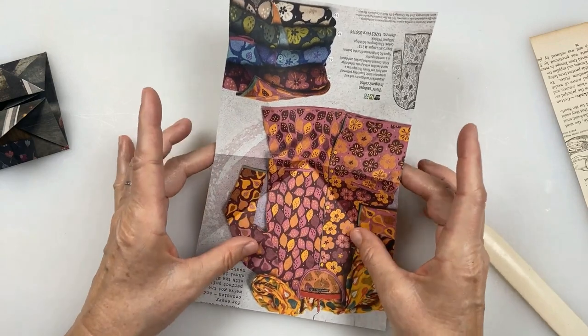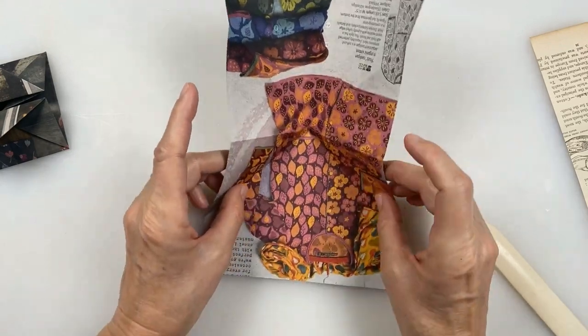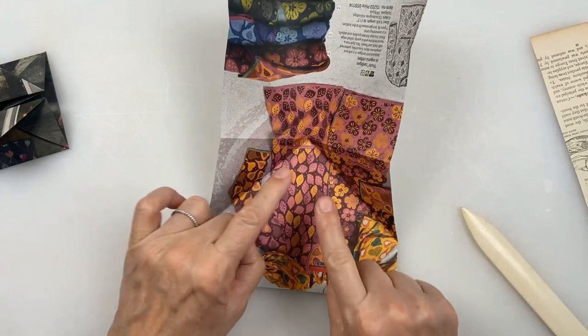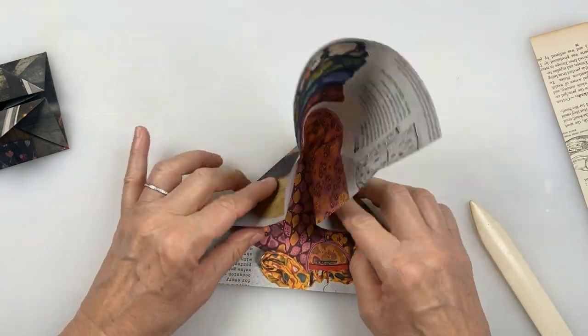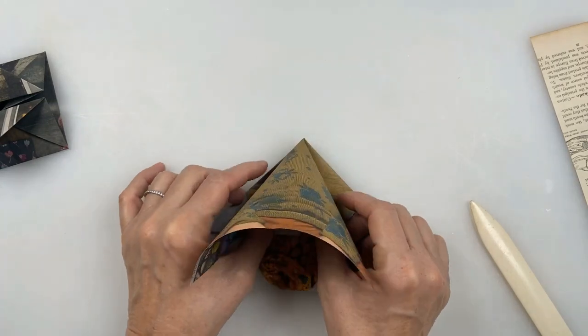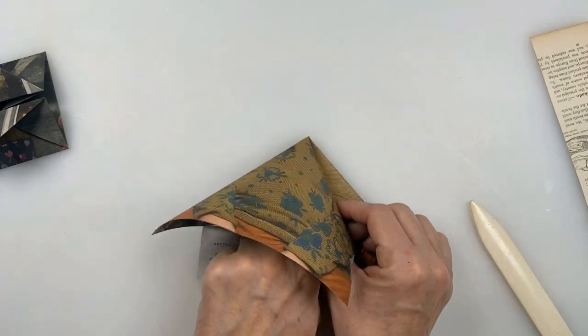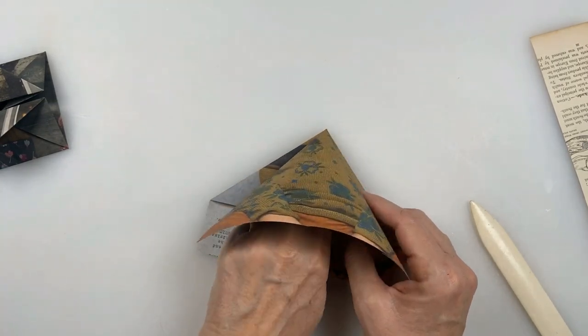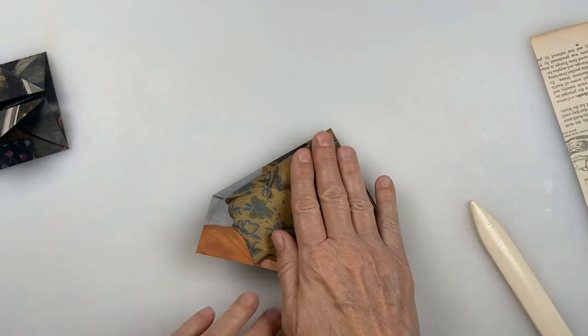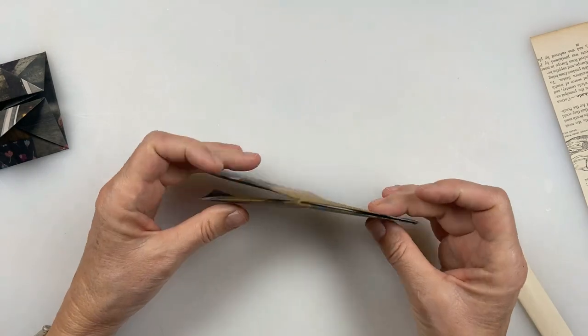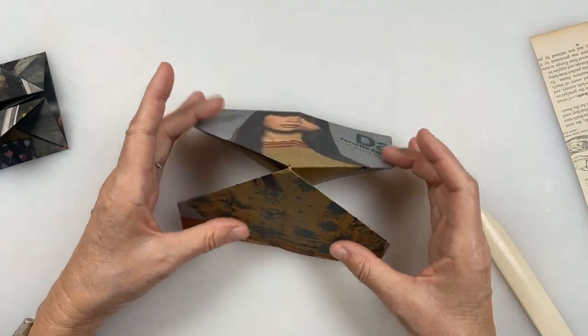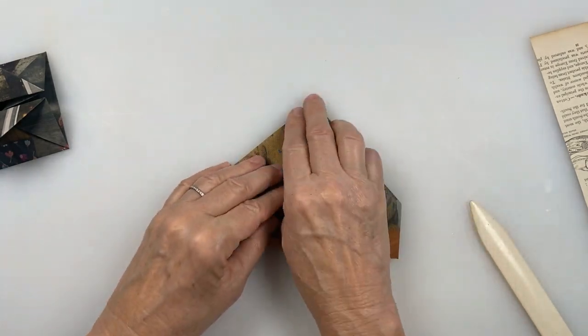And now I'm going to take these ends and I'm just going to bring them into the center. These peaks here I'm bringing these mountain folds, bringing them into the center. And then I'm going to take the folds that are here, the diagonal folds. I'm going to reverse them and then I'm just going to collapse this into this face with two flaps on either side. And that's what you should have now.